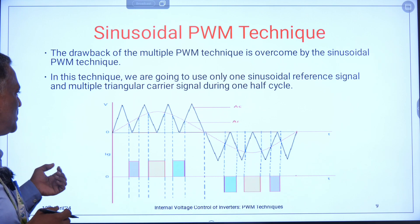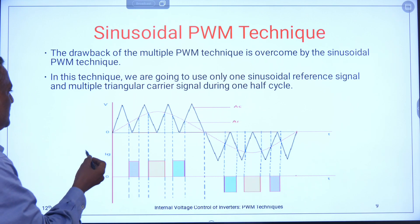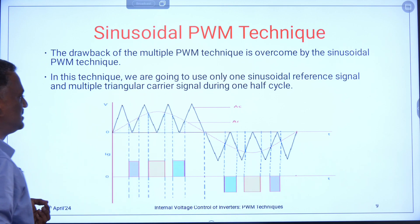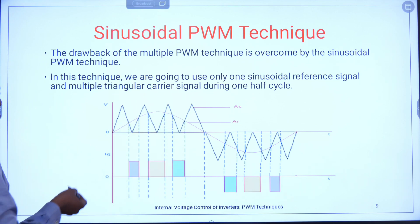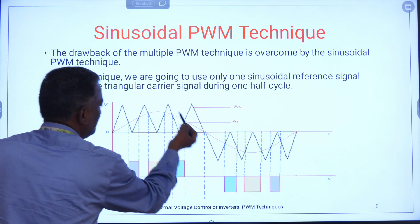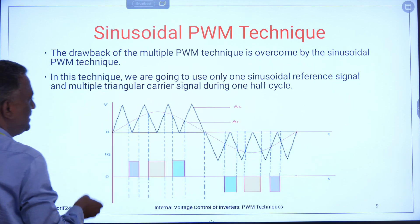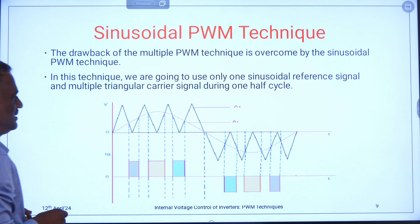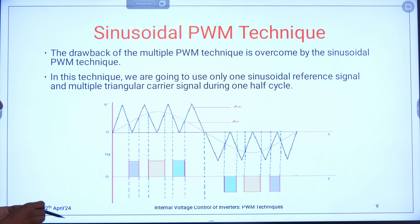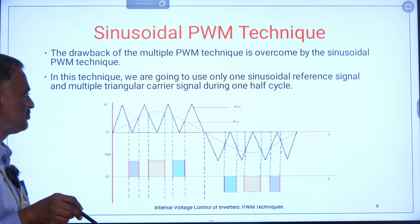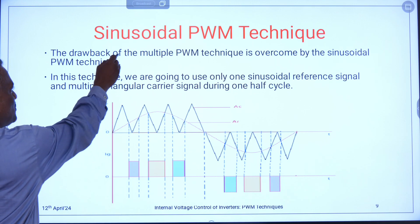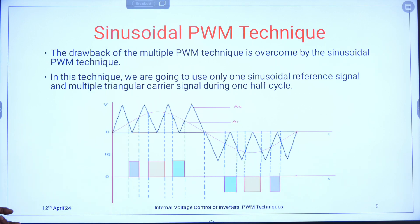When you take the third method — sinusoidal PWM — you again have a carrier signal and a reference signal. Here, the sine wave is acting as the reference signal and the triangular waveform is acting as the carrier signal. But in the previous two cases, we used a rectangular waveform as the reference. Here, we are using the sine waveform — that is why it is called sinusoidal pulse width modulation technique.